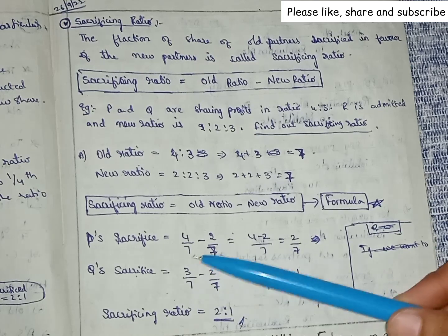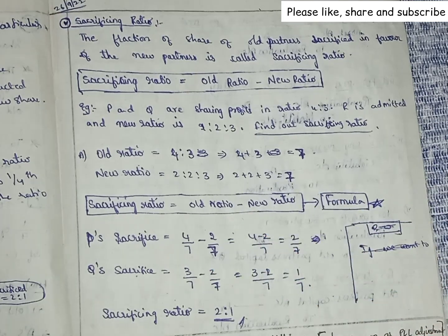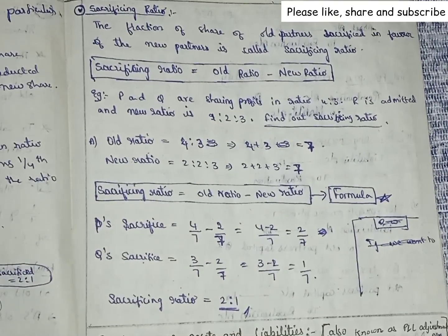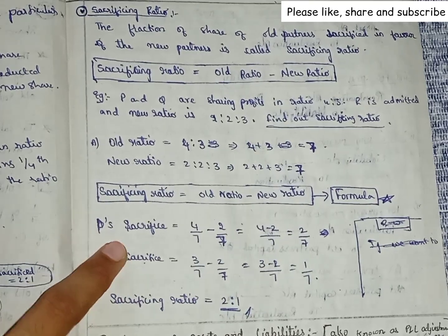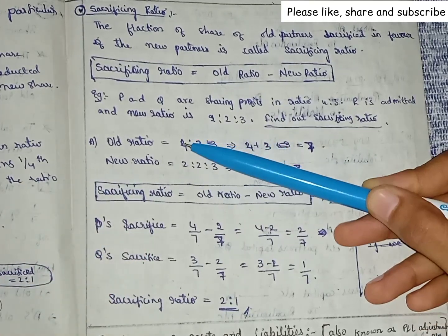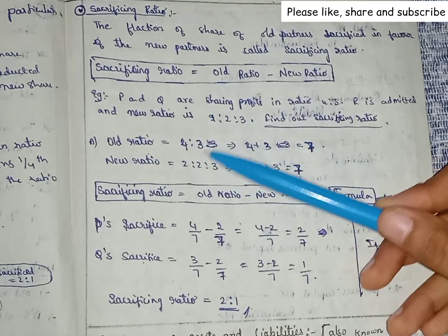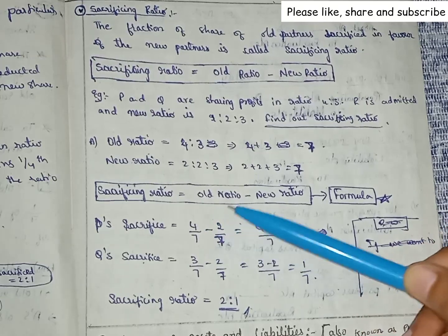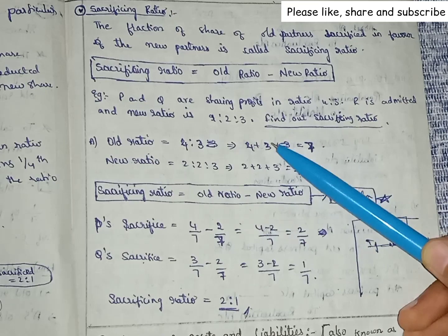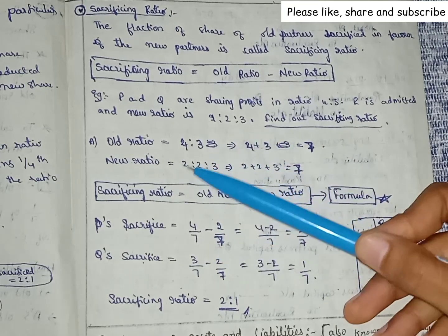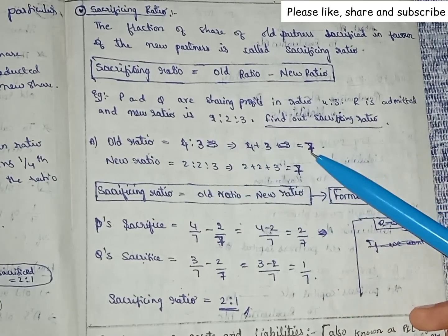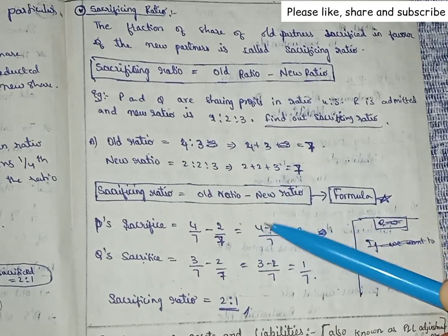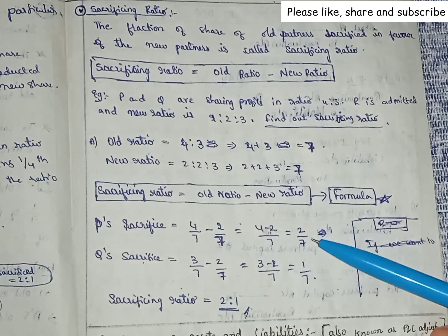Using the sacrificing ratio formula — old ratio minus new ratio — P's old ratio is 4 by 7 and new ratio is 2 by 7. So P's sacrifice is 4 by 7 minus 2 by 7, which equals 2 by 7. So 2 by 7 is sacrificed by P.